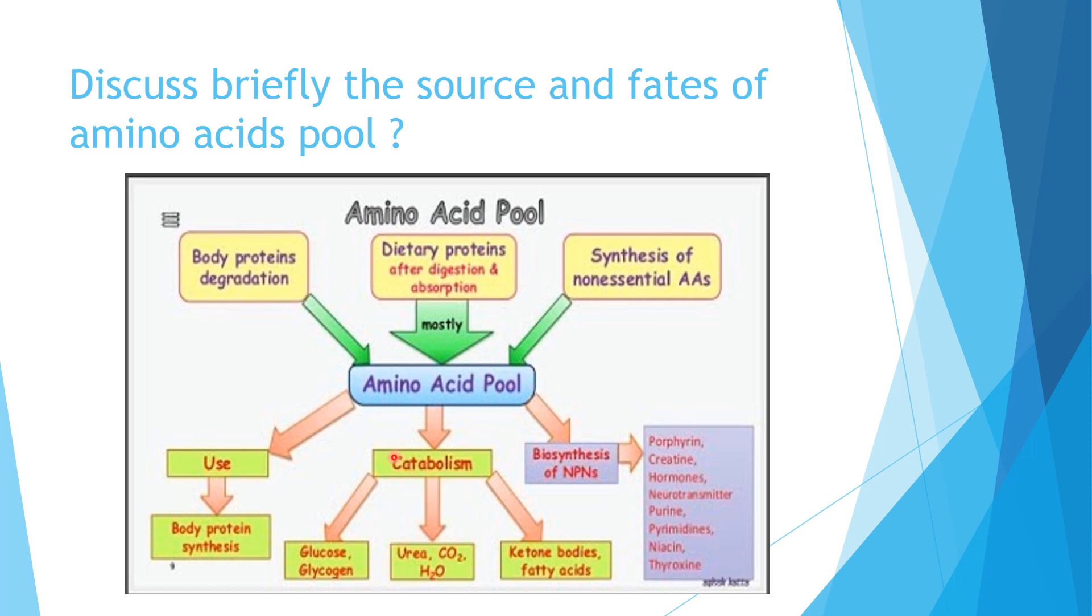and catabolism of the carbon skeleton produces either glucose or ketone bodies. These are the sources and fates of amino acid pool.